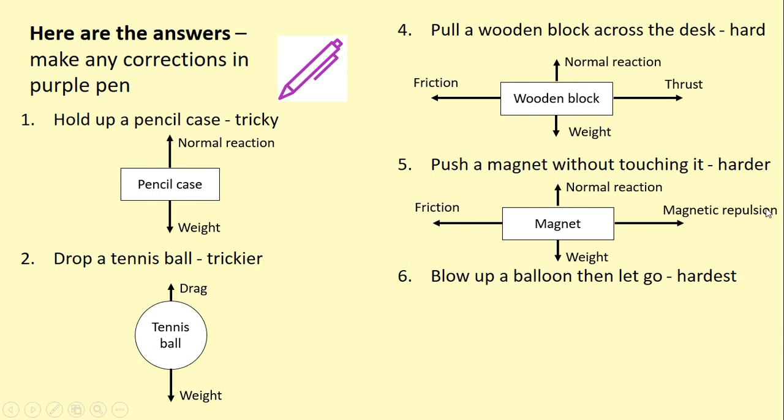Pushing the magnet is going to look very, very similar. The only thing we need to think about now is what we're going to name the force that pushes it. So you wouldn't necessarily be wrong if you've written thrust, it could look exactly the same as this, but specifically that thrust is caused by magnetic repulsion. So we can name it as magnetic repulsion, we're pushing it without touching it, so it's repulsion because that is a magnetic pushing force.